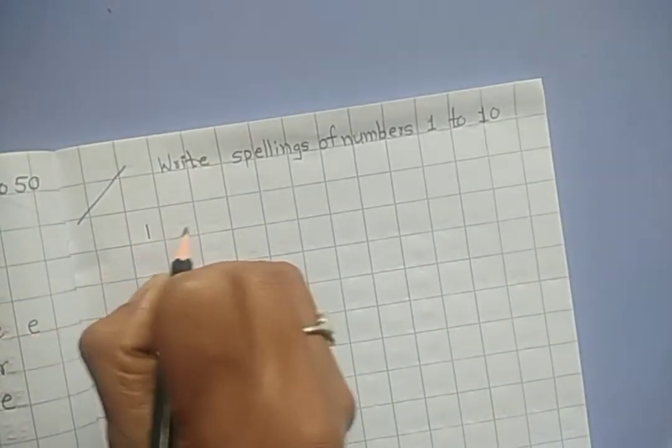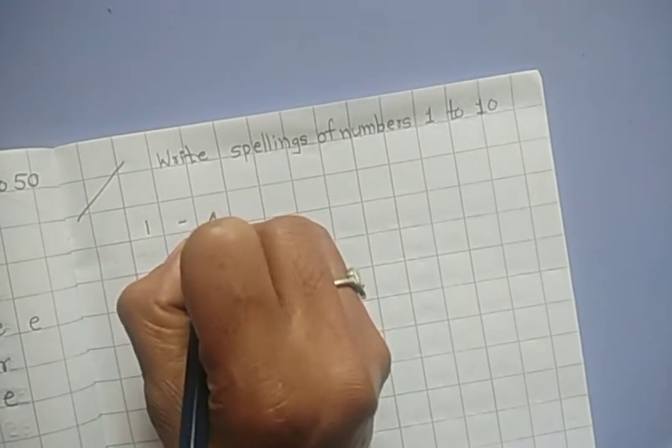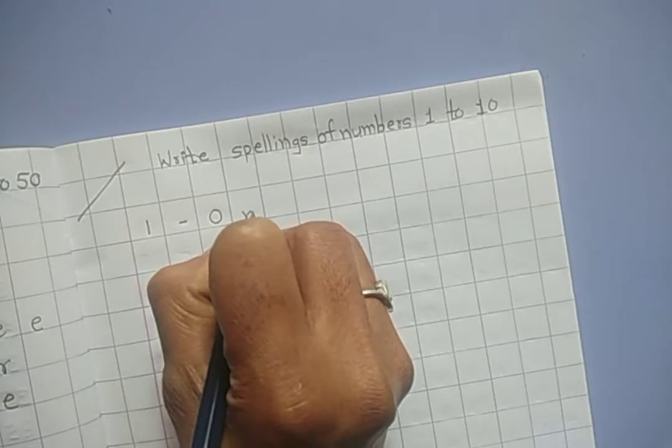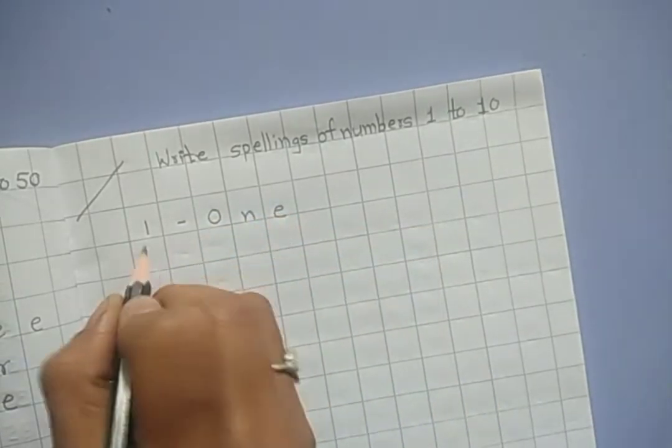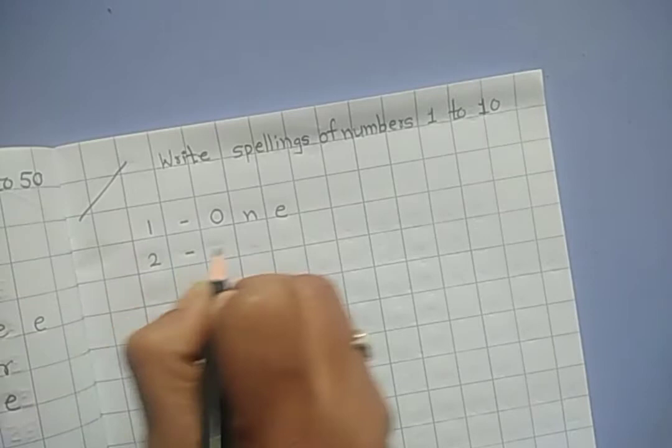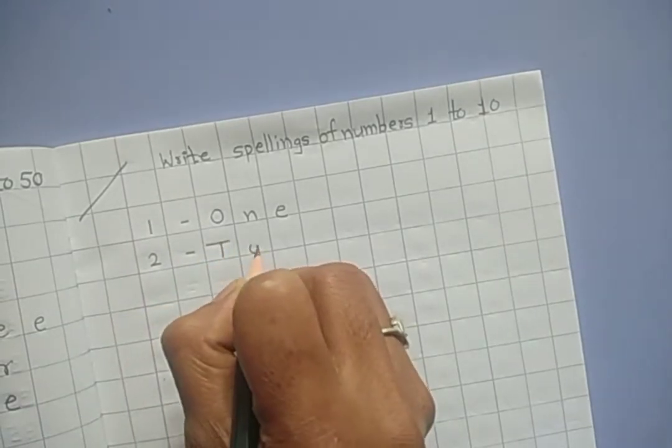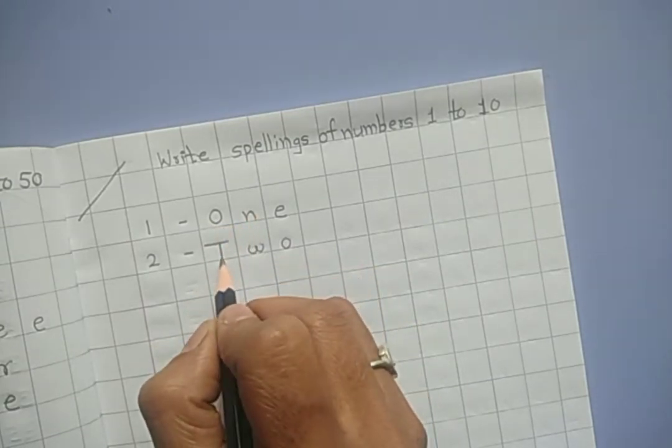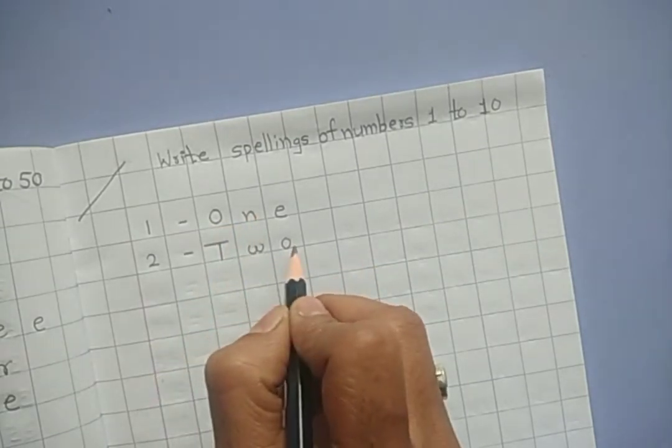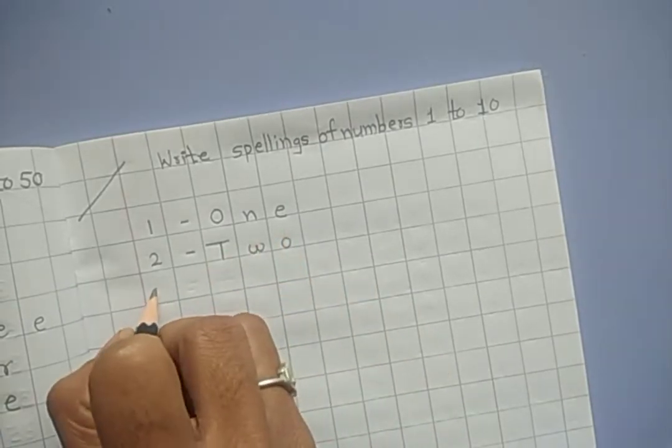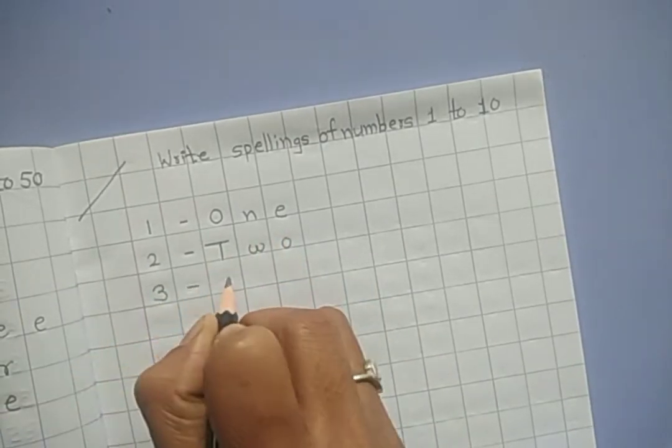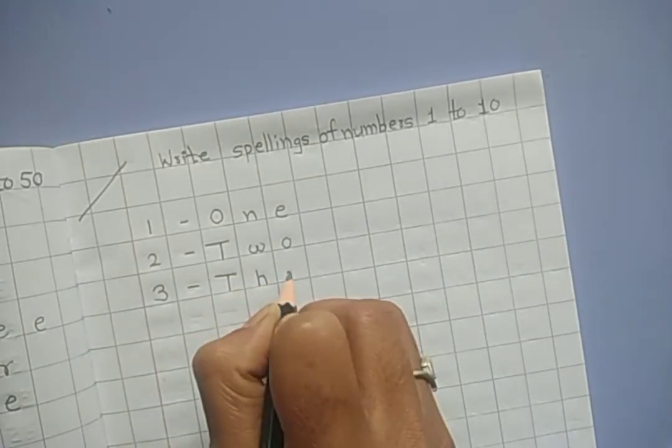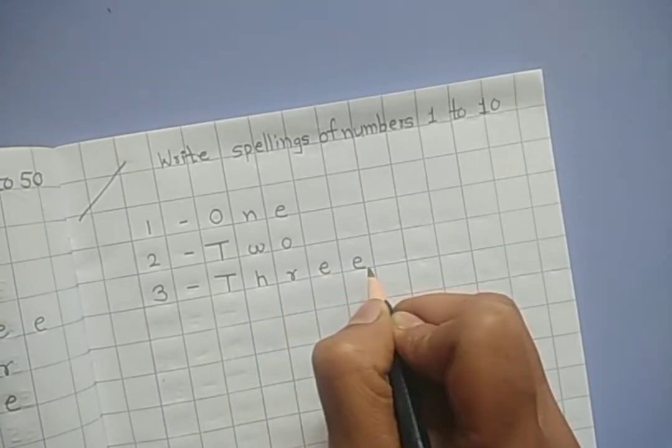Number 1 dash, what is the spelling of 1? Yes, O-N-E, one. Number 2 dash, T-W-O, two. First letter of each spelling should be capital and other should be small, okay? Number 3, what is the spelling of 3? T-H-R-E-E, three.